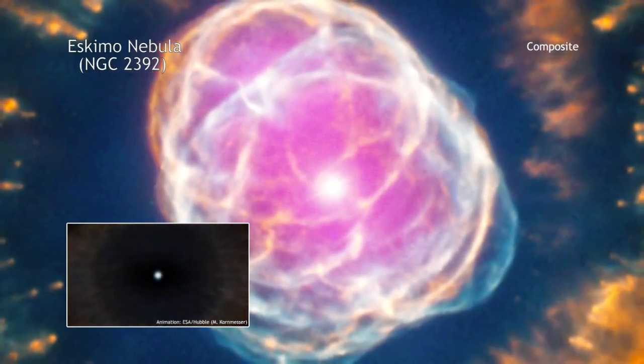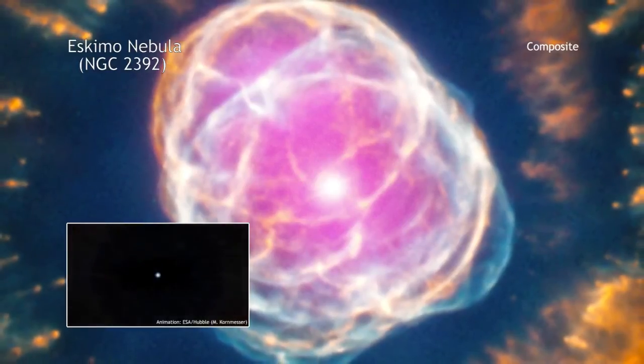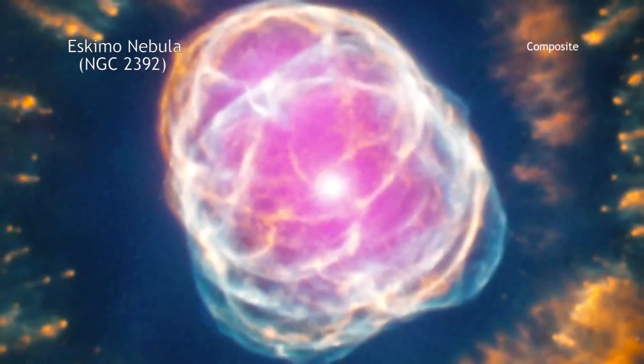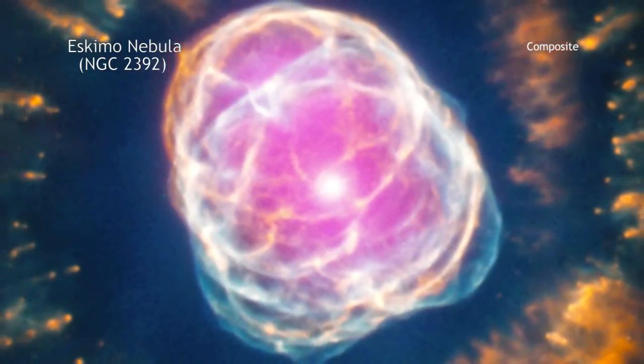This hot core has a surface temperature of about 50,000 degrees Celsius and is ejecting its outer layers in a fast wind traveling 6 million kilometers per hour.